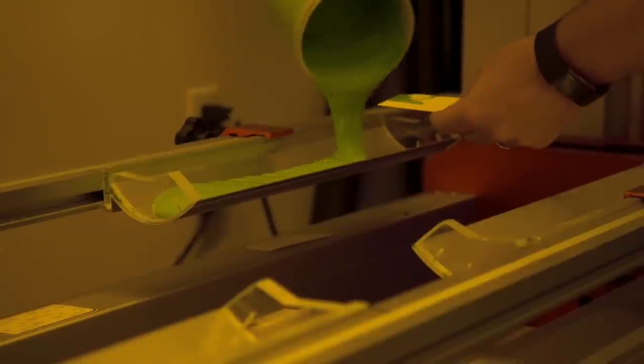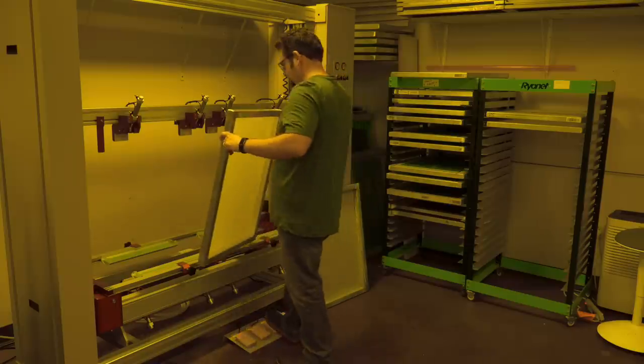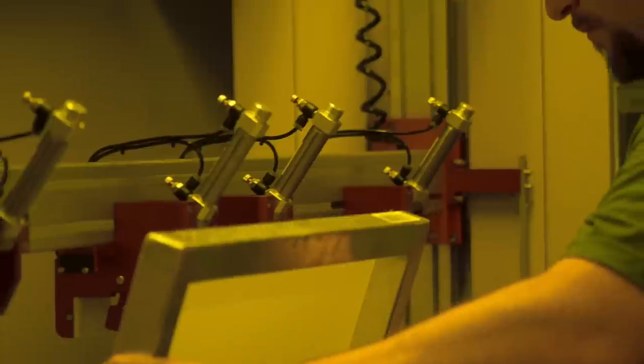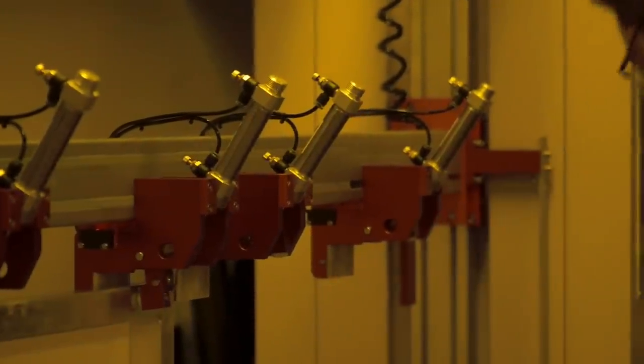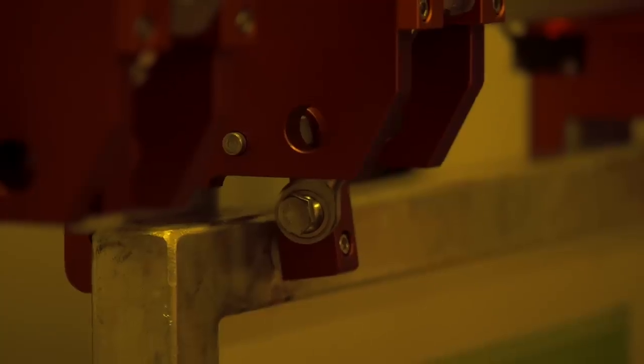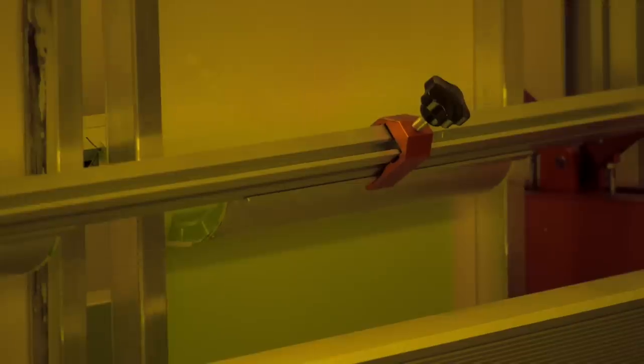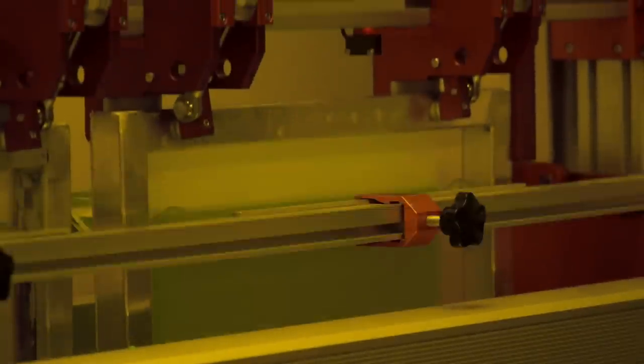First, we start with the Sadi dual coater. The operator places up to two screens at a time into the clamps and, depending upon the settings, can coat between four to five hundred screens in an eight-hour shift. For a more in-depth look at the different specs of the ProCoat, watch our Sadi ProCoat introduction video linked below in the description.